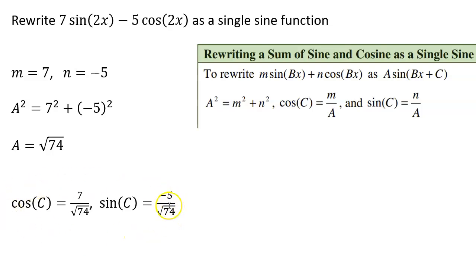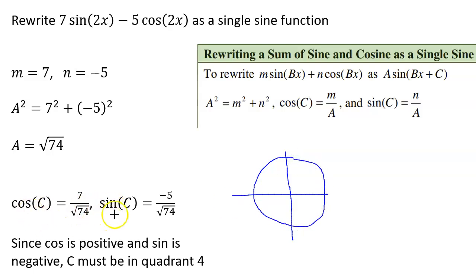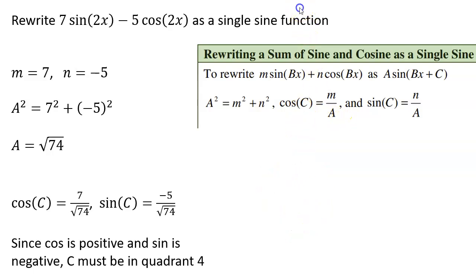We can use either equation to solve for c, but we need to consider both to determine the correct quadrant. Since cosine is a positive value and sine is a negative value, c must be in quadrant four. On the unit circle, the cosine value is the x-coordinate — it's positive — but the sine value is negative, which means the angle must be in the fourth quadrant.